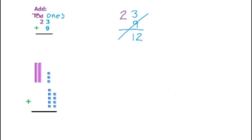So this is how this equation looks with blocks. So we have 2 tens here, so 20, and then this is 3 ones, so this is 23, and this is 9 ones for the 9. So we're adding 23 plus 9.